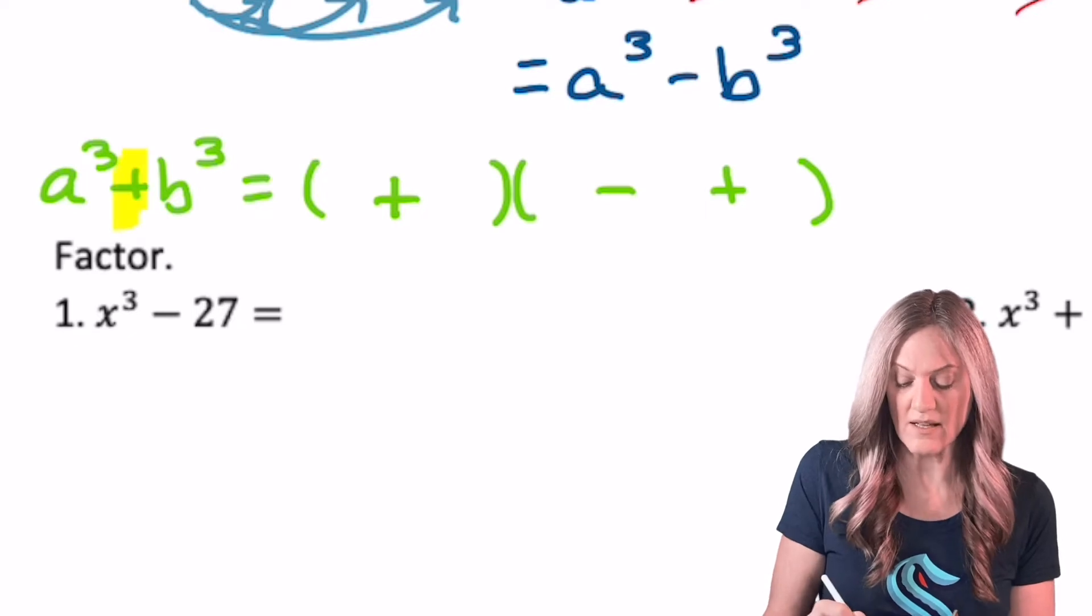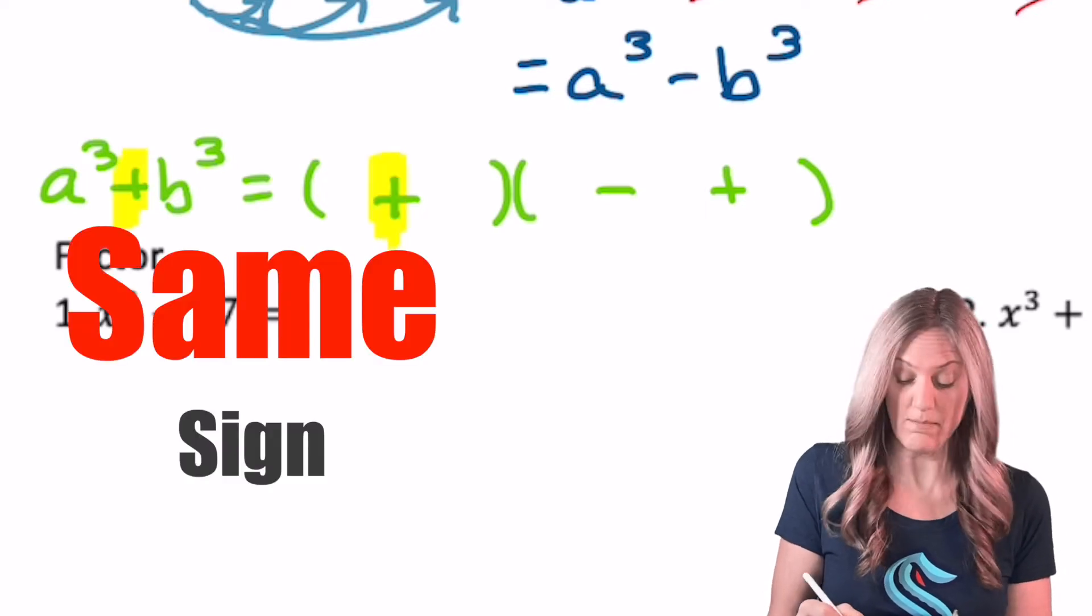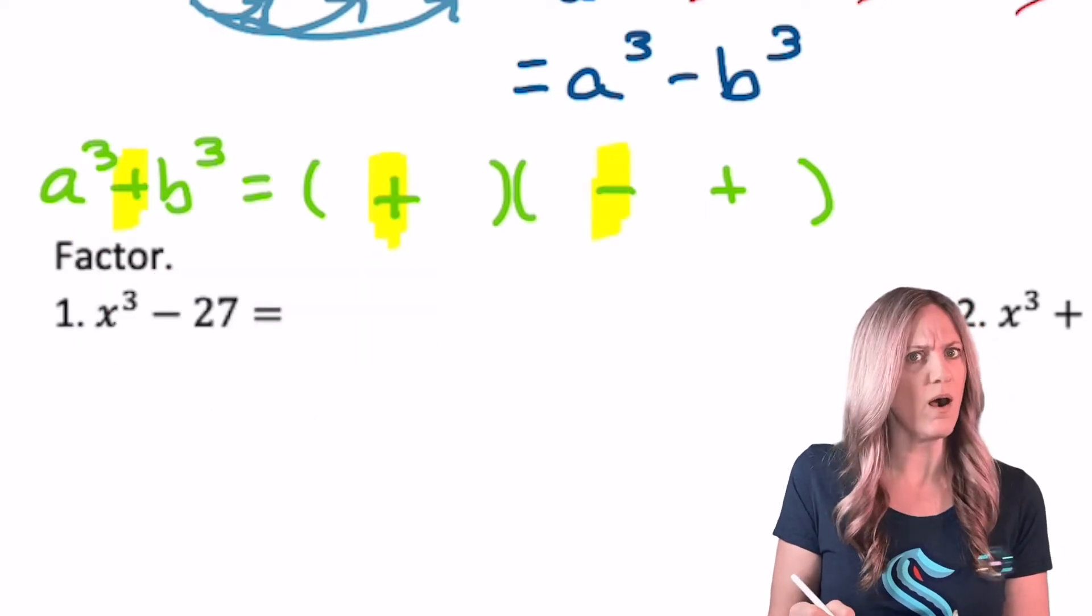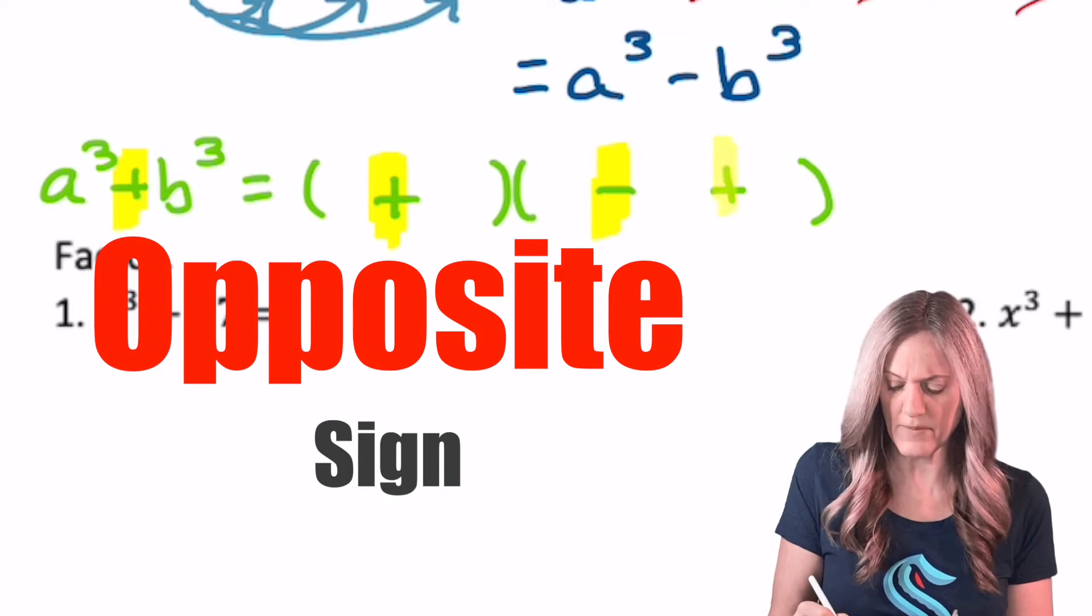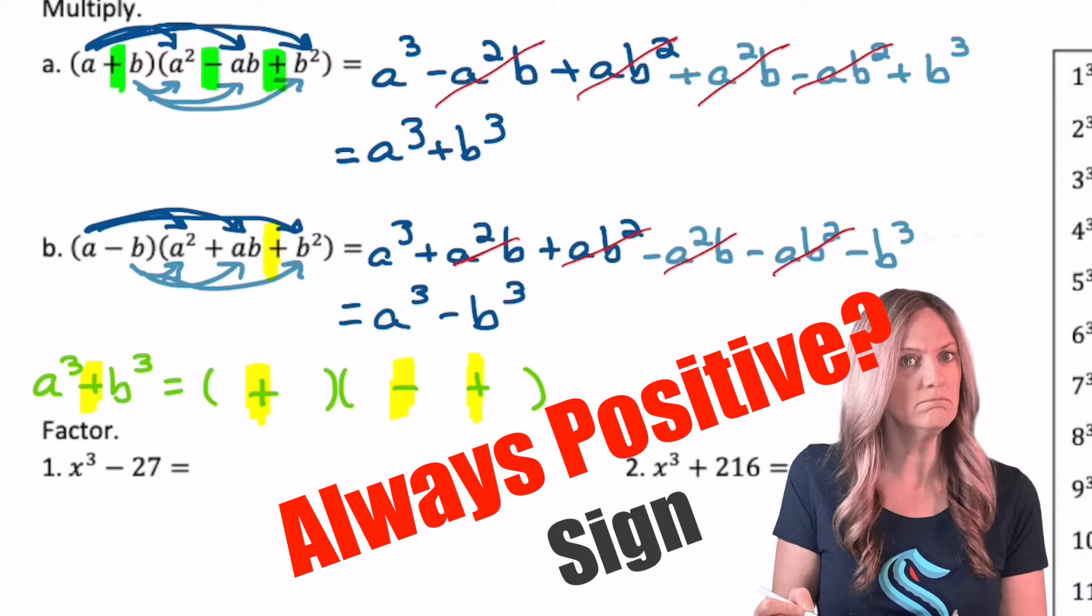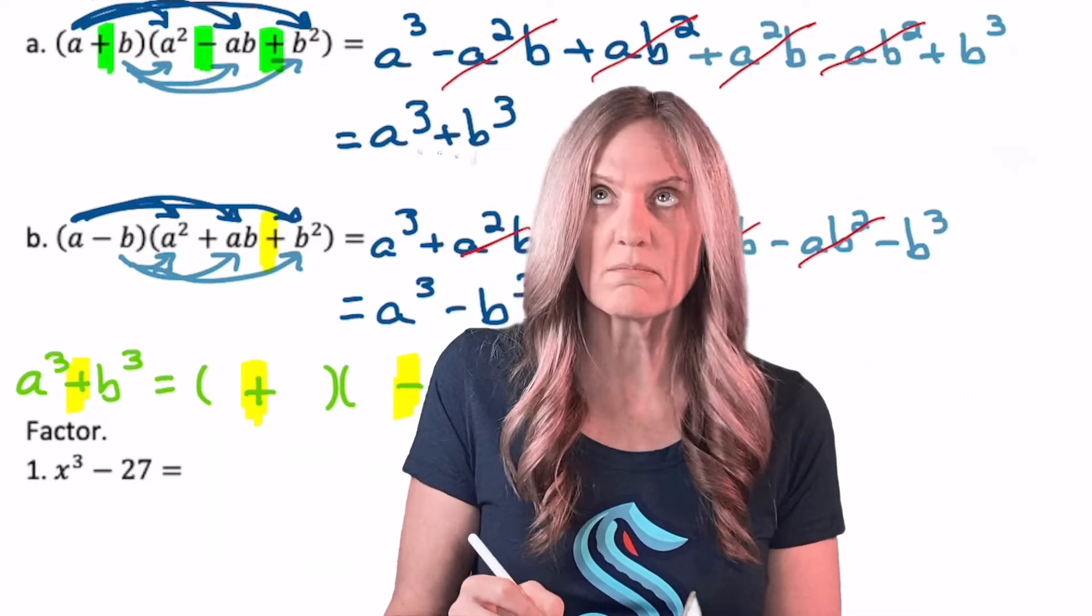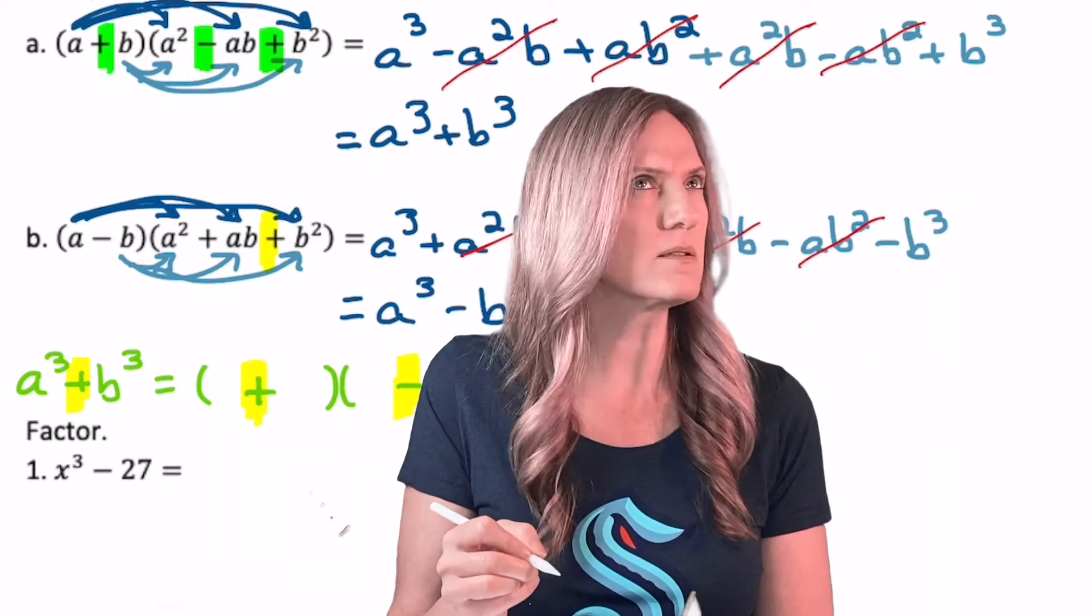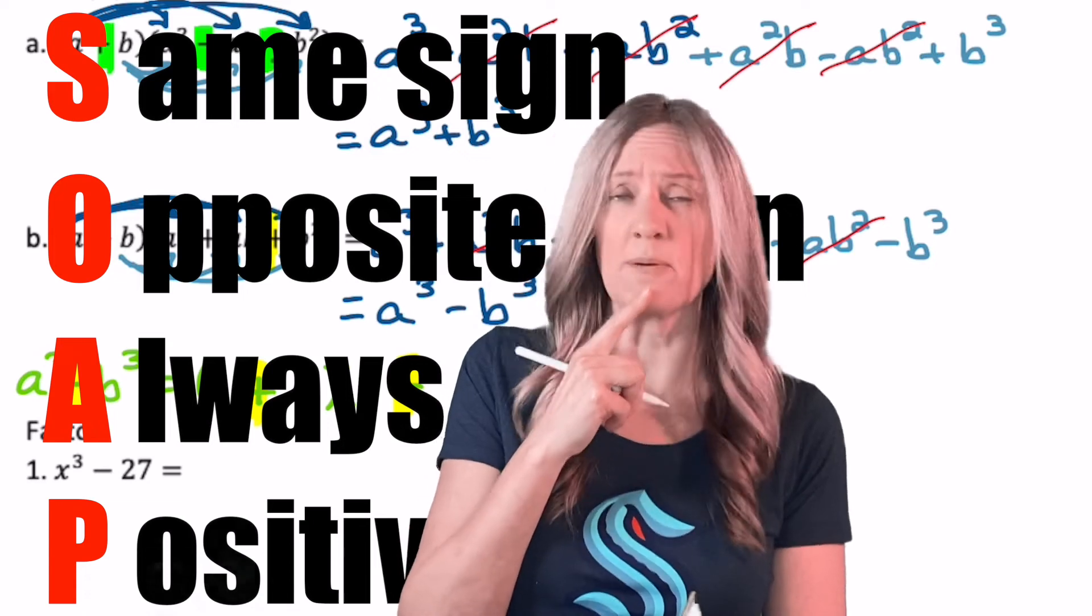I wish we had a good way to remember how to put the signs. Let's see. We started with a plus. Well, this is a plus, so same. Then it goes minus. Oh, opposite. And that's positive. And did you notice that it's positive here as well? It seems like SOAP, the factory method of 2020.